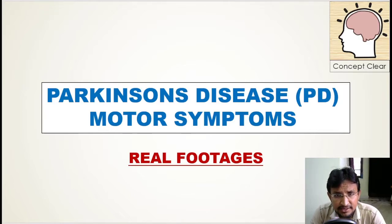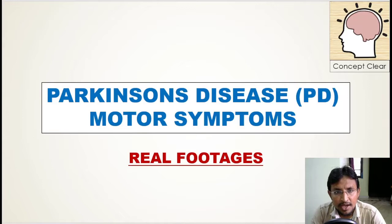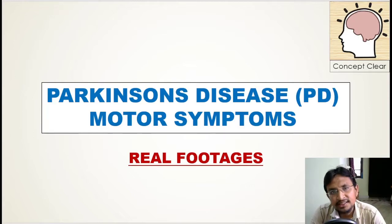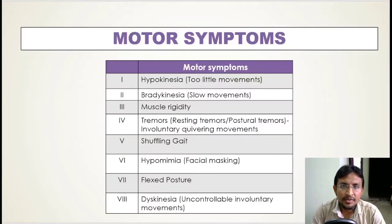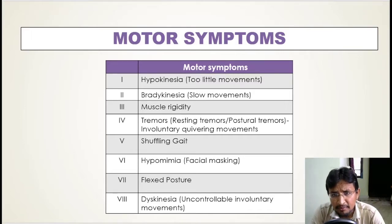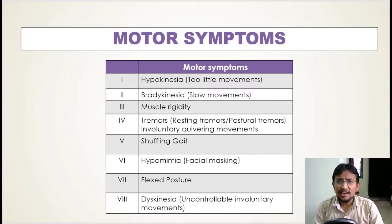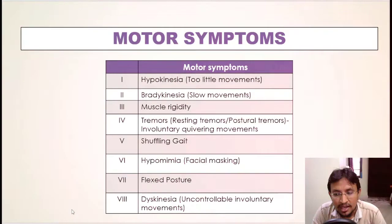The symptoms of Parkinson's disease were first outlined in 1817 by James Parkinson himself. The cardinal motor symptoms — the most important motor symptoms of Parkinson's disease that we must remember — are: hypokinesia, bradykinesia, muscle rigidity, tremors, shuffling gait, hypomimia, flexed posture, and dyskinesia.